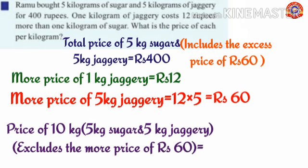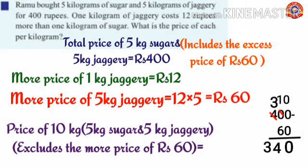From this 10 kg, we exclude the extra price of jaggery for 5 kilograms, which is 60 rupees. Subtract 60 from 400: 0 minus 0 is 0. We can't subtract 6 from 0, so borrow 1 from 4; 0 becomes 10 and 4 becomes 3. 10 minus 6 is 4, and 3 remains. So the price of 10 kilograms equals 340 rupees.